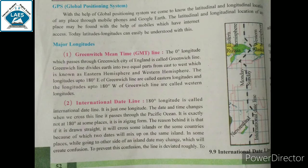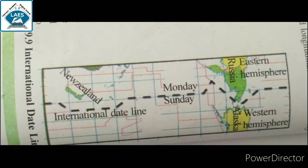To avoid any confusion of date, this line is drawn through the sea and not the land. Confusion ना हो इसके लिए जो line है वो sea से बनाई हुई है, land पे इसका use नहीं किया हुआ है। इसीलिए यह zigzag form में है International Date Line। यहाँ पे देखें — International Date Line black dashes में बनी हुई है और zigzag form में है। बीच में Monday और Sunday लिखा है — जैसे यह date line cross होगी, वैसे day और time भी change हो जाएगा।